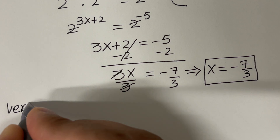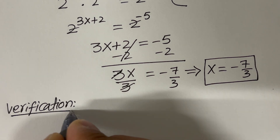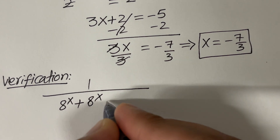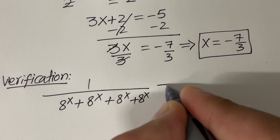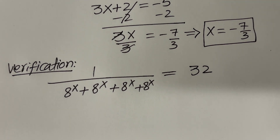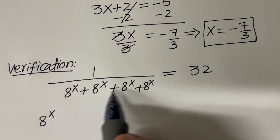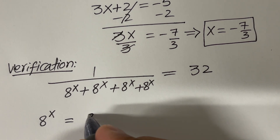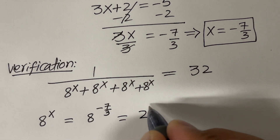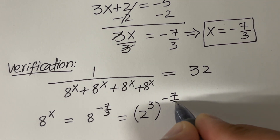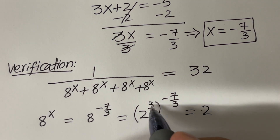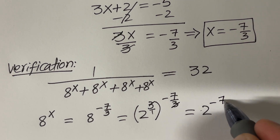Let's verify the answer now. The given equation was 1 over (8 raised to the power x plus 8 raised to the power x plus 8 raised to the power x plus 8 raised to the power x) equals 32. First, let's find what 8 raised to the power x equals by substituting x equals negative 7 over 3. Since 8 is 2 raised to the power 3, we multiply the exponents: the 3s cancel, leaving 2 raised to the power negative 7.